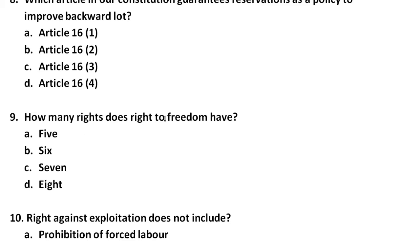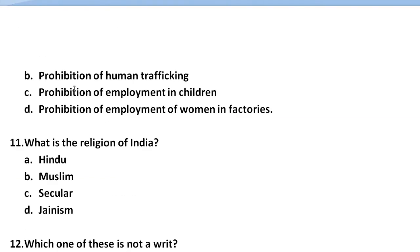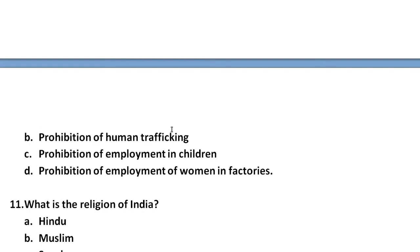Question number 10: Right against exploitation does not include which of the following? The options are: A) prohibition of forced labour, B) prohibition of human trafficking, C) prohibition of employment of children, D) prohibition of employment of women in factories. Identify which one is not included under the right against exploitation and select that option.